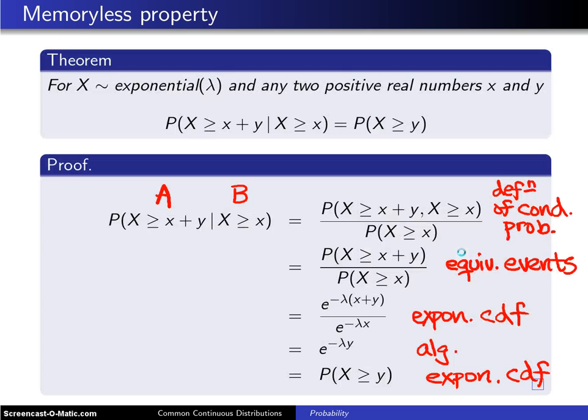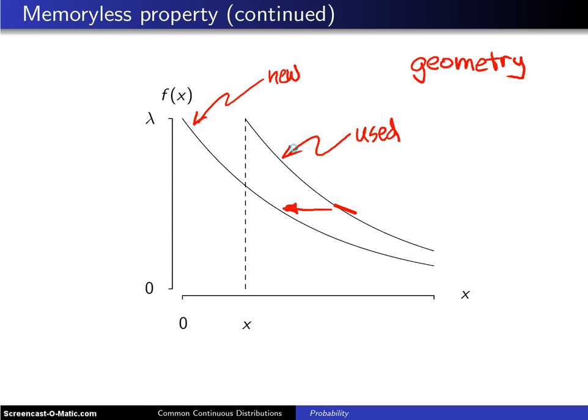If you go back to the original result, here is what is known as the survivor function of a brand new light bulb, and here is the survivor function of a light bulb that has survived to time x. So the geometry behind the memoryless property is, if you take the original distribution, and take any value x and rescale it, the used distribution will be identical to the distribution of a new light bulb.